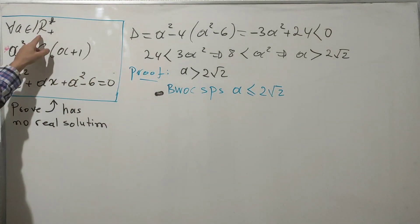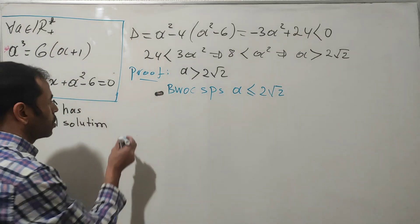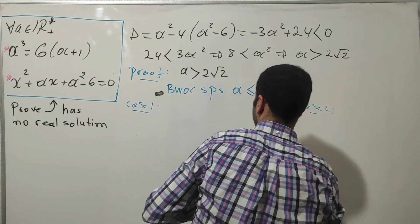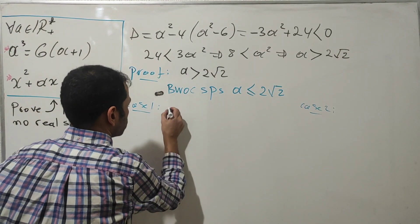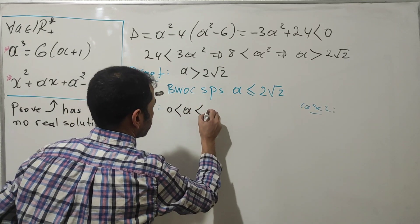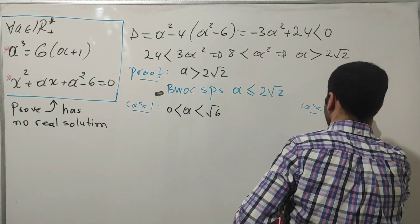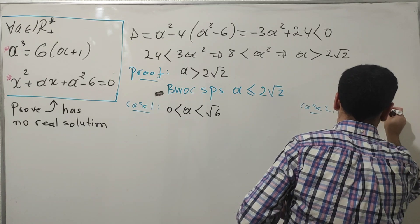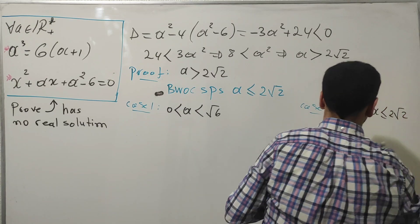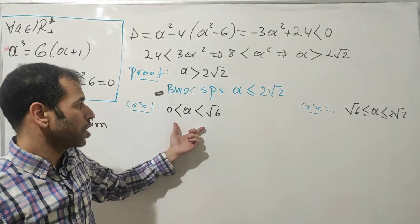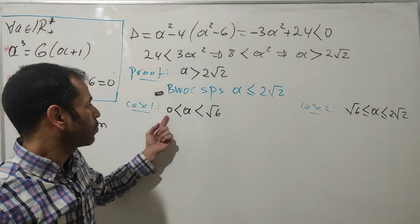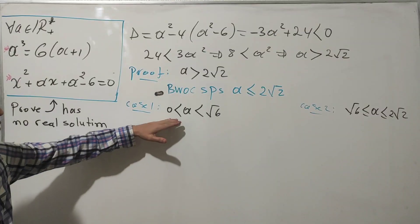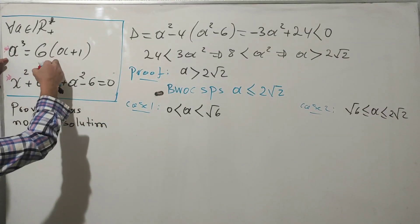Since a is a positive real number, we divide into two cases. Case 1: 0 < a < √6. Case 2: √6 ≤ a ≤ 2√2. So I have divided the interval into two parts: from zero to √6, and from √6 to 2√2.